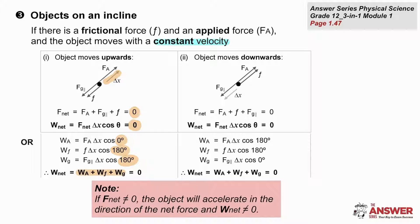If that object is travelling down the slope, the net force is still zero, which gives us a net work done on the object of zero. This time the applied force is going in the opposite direction and so does negative work, along with the frictional force, whereas the gravitational force does positive work. The sum of works gives us a net work of zero joules.